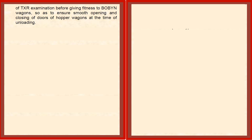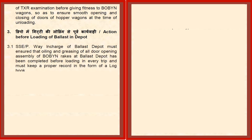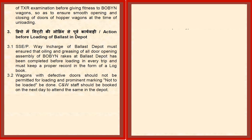This is the point I am stressing. The in-charge of the ballast depot must ensure the oiling and greasing of all door-opening assemblies of bogie and rakes at the ballast depot before loading in every trip, and must keep a proper record in a log book. Door responsibility lies with the mechanical staff. Wagons with defective doors should not be permitted for loading, and prominent marking 'not to be loaded' should be done.